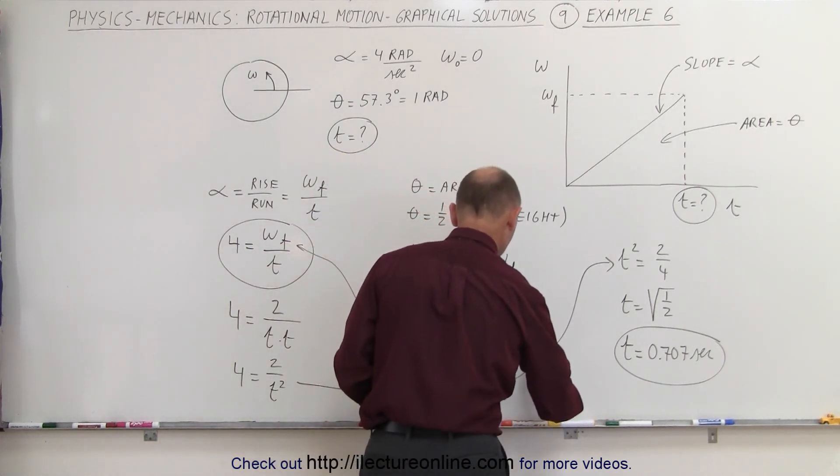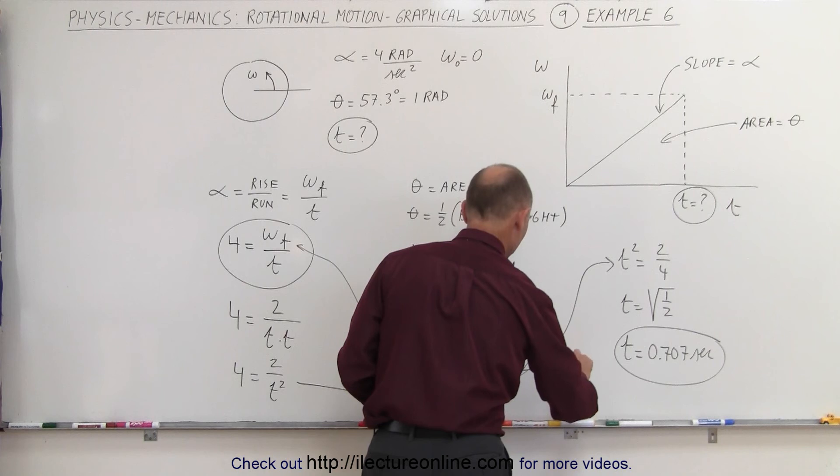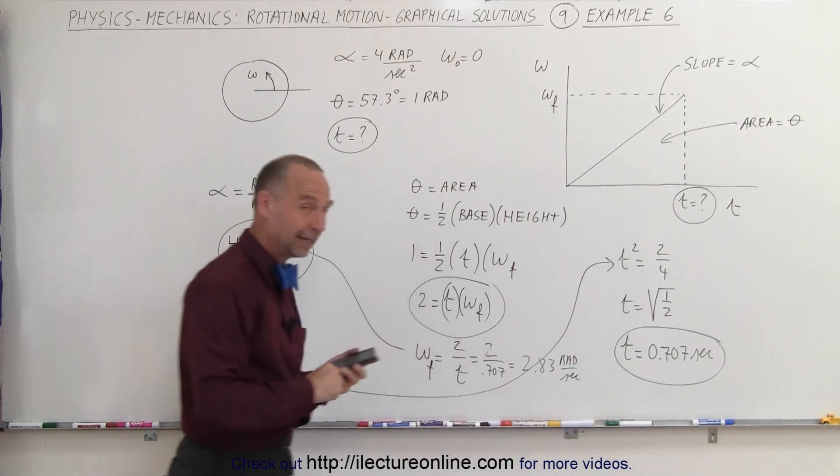Two divided by 0.707, and that ends up being about 2.83 seconds. Oh, no, I should say radians per second. 2.83 radians per second for the final omega, in case you were interested.